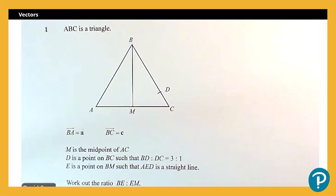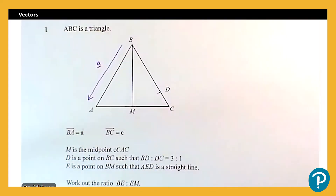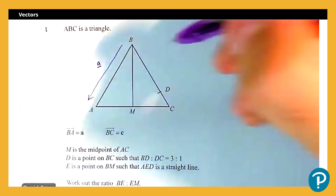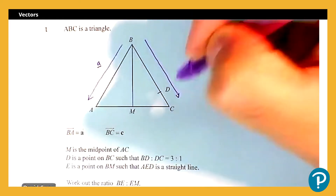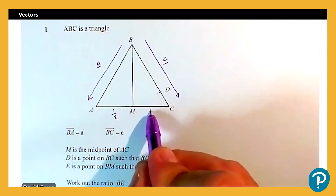We're looking at a tricky vector problem. ABC is a triangle — we've got a line BM marked where M is on AC, and a point D marked somewhere on BC. The vector b to a is vector a, so going that way is vector a, and b to c going this way is vector c. M is the midpoint of AC, so that's split half and half.